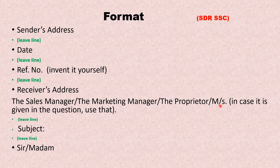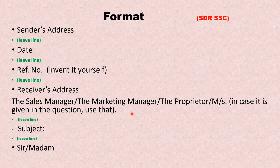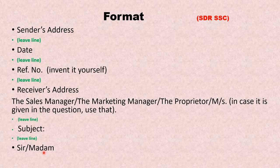Messrs is short for messieurs. In case the receiver is already given in the question, such as director or wholesaler, you use that. After writing the complete receiver's address, leave a line, write the subject, leave a line, and then comes the salutation. There should be six things in the format. The sixth thing is the complementary clause, which comes at the end.